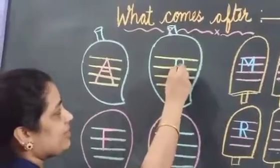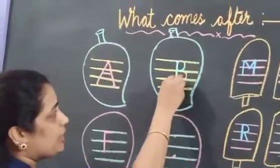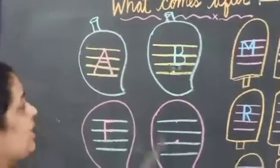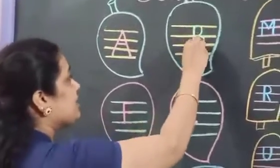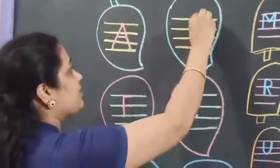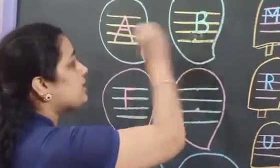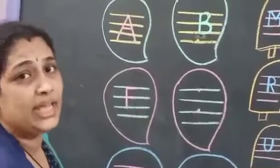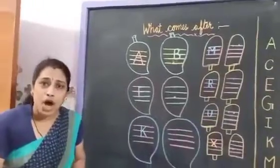Then small curve. What is this curve? And one more curve. It means B. Standing line, curve, one more curve — it's made B.